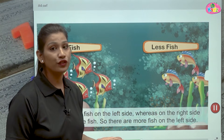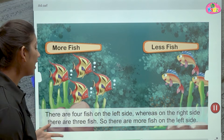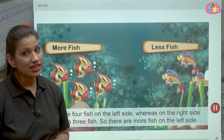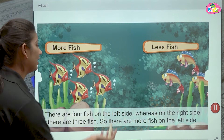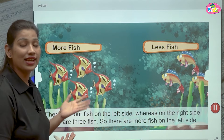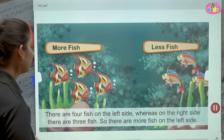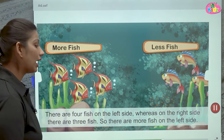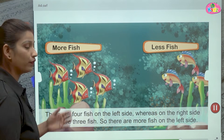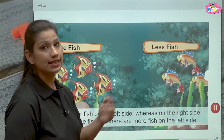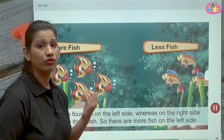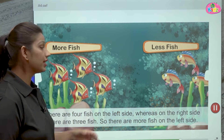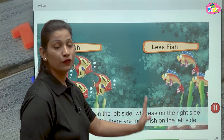So which side do we have more fishes? Yes, we have more fishes on the left side. Hamari paas left side zyada fishes hai. Right side se comparatively left side zyada fishes hai. So we will say more fish, less fish. Because left hand side pe four fishes hai aur right hand side pe three fishes hai. Toh three toh kam hota hai, less hota hai as compared to four. So we will say four fish, three fish.